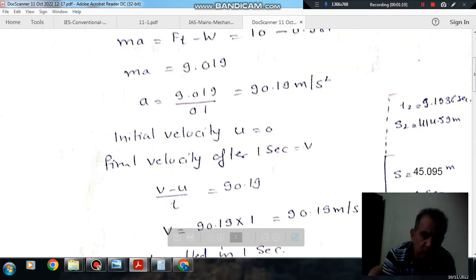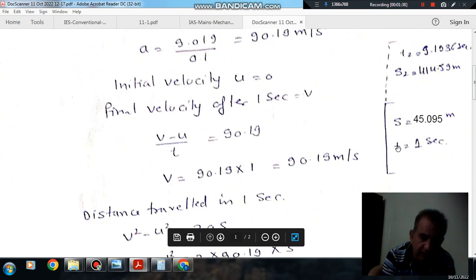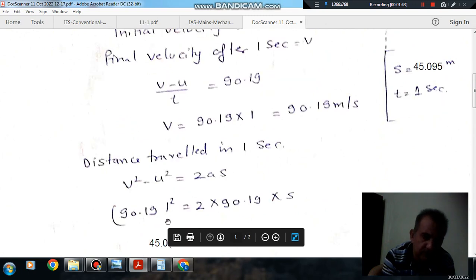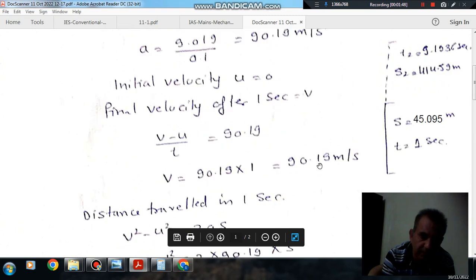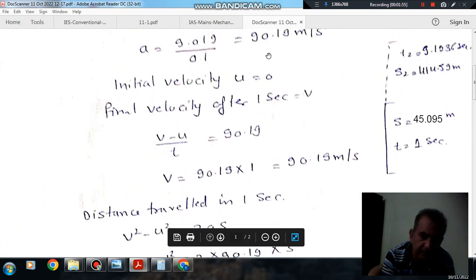Now suppose this is your initial point and this is your point after 1 second. Initial velocity u = 0, acceleration a = 90.19 m/s². Using v = u + at for t = 1 second, final velocity v = 90.19 m/s.